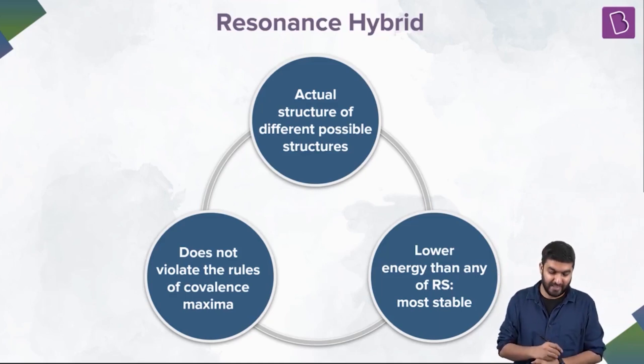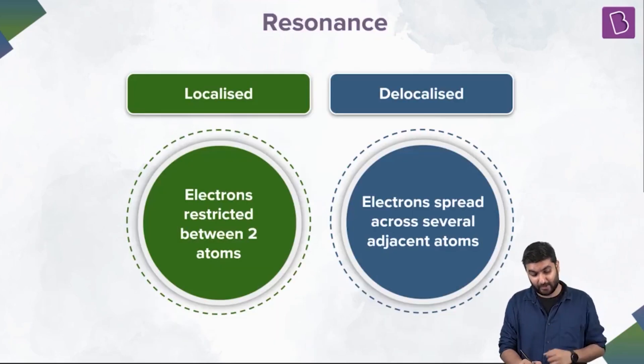It does not violate the rule of covalent maxima. Obviously, you are not doing some drastic, unrealistic, out-of-the-world thing here. So the number of electrons do not change. The inter-nuclear positions do not change. And the covalent rules are not violated. The basic principles of covalent bond are not violated. Now, the point is, there are two terms we need to study. Localized and delocalized.